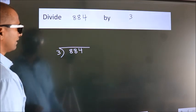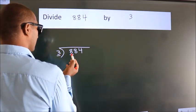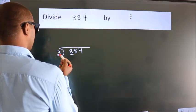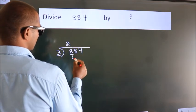Next, here we have 8, here 3. A number close to 8 in 3 table is 3 times 2 equals 6.